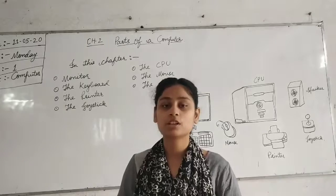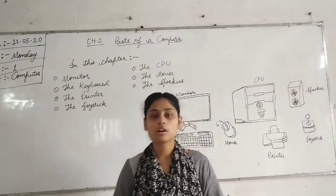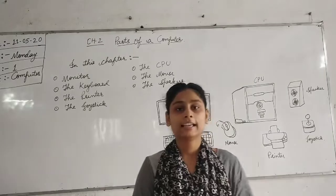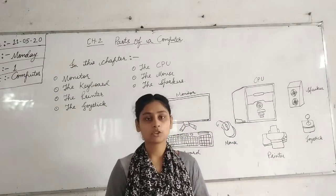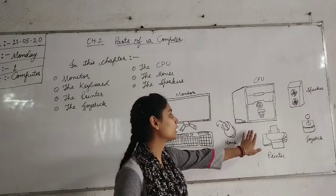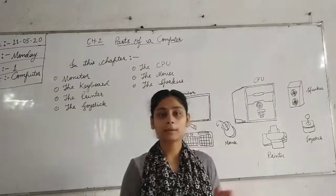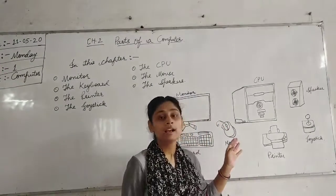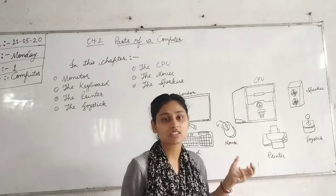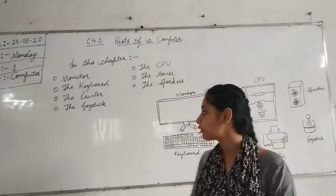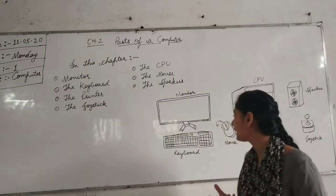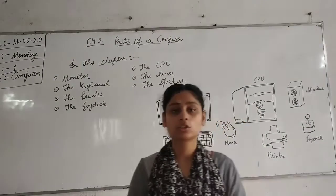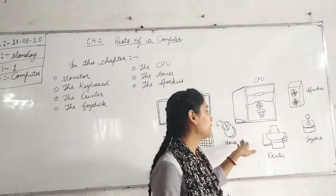The CPU stands for Central Processing Unit. It is also called the brain of the computer. It is called the brain because it controls all the other parts — it controls the monitor, the keyboard, and the mouse.